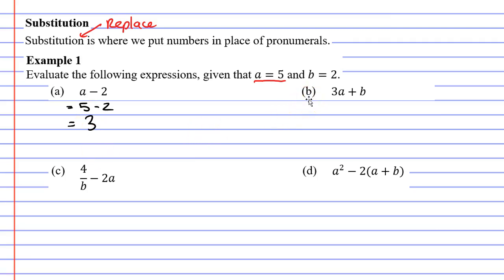Let's now move on to question B. It says 3a plus b. You might remember that when you have a number next to a pronumeral such as 3a, it really means 3 times a. There's a hidden multiplication there. Now we can substitute. We're going to replace the a with a 5 and the b with the number 2. We have 3 times 5 plus 2.